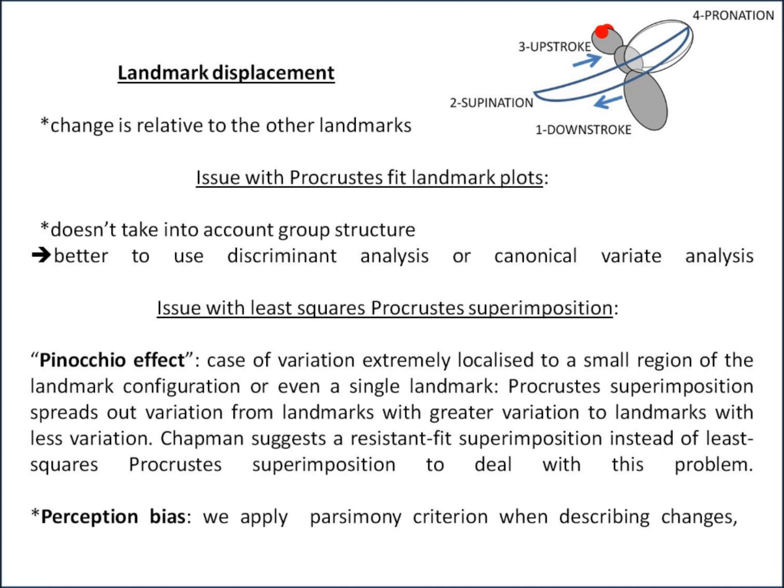Take Pinocchio's head as an example: if you digitize his whole head including the nose, we tend to see the head as fixed and the nose as moving, rather than having the nose fixed and all the rest of the head moving backwards. This is quite a significant bias and we have to be careful when interpreting changes in shape.